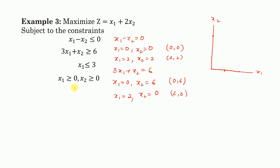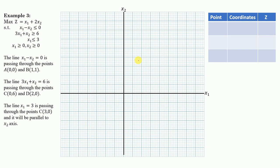For the third equation, x1 = 3, there is no x2 component — x1 is fixed at 3. So this line is parallel to the x2 axis, passing through the point (3, 0).